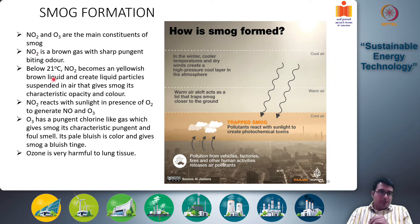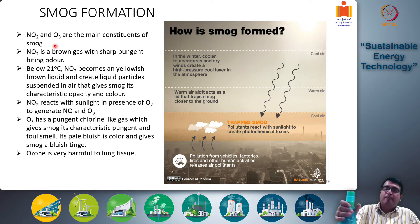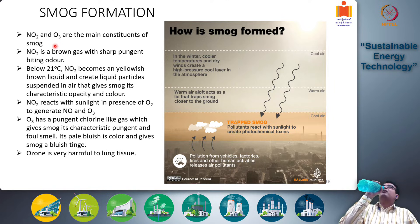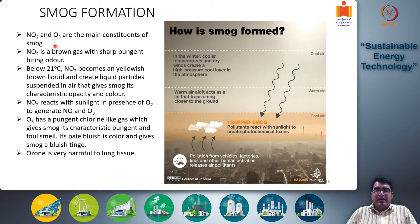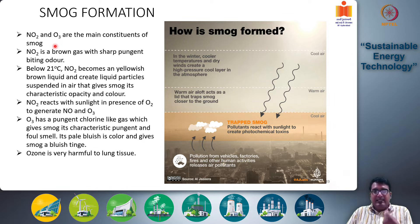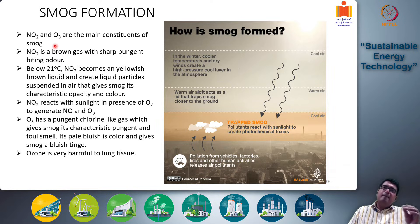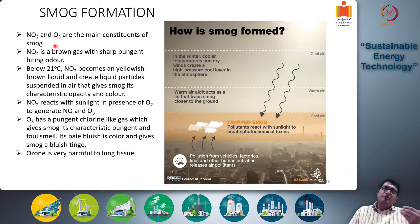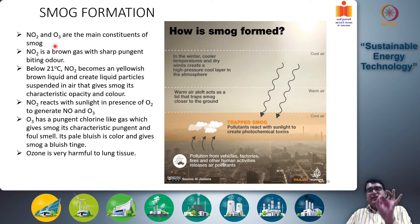The main constituents of smog are NO2 and O3. NO2 is a brown gas with a sharp, pungent, biting odor. Below 21 degrees Celsius, NO2 becomes a yellowish-brown liquid. This liquid-vapor phase transition happens when air temperature falls below 21°C, which is very typical during winter. The NO2 gas becomes suspended yellowish-brown liquid droplets in the air.